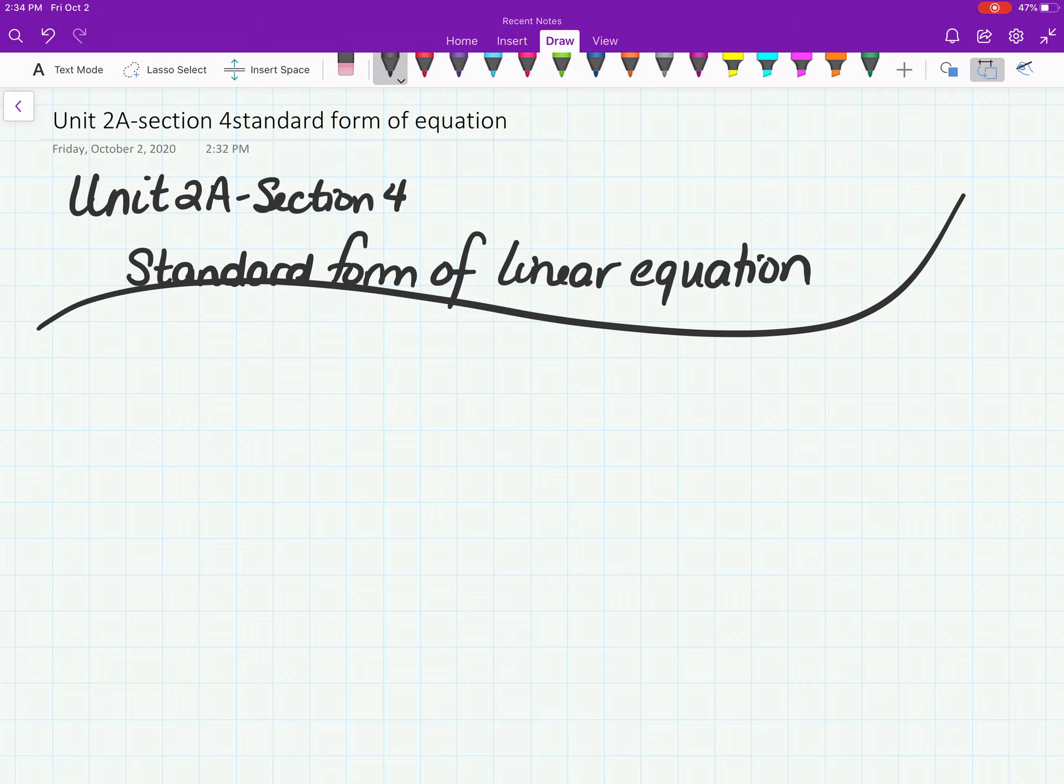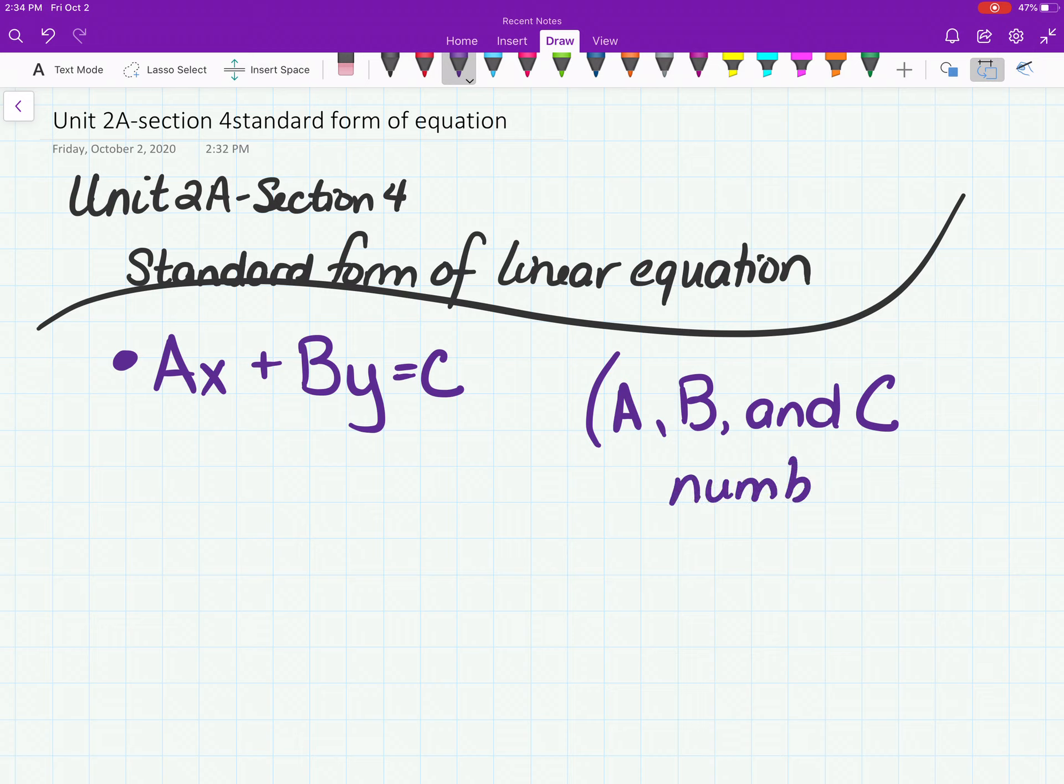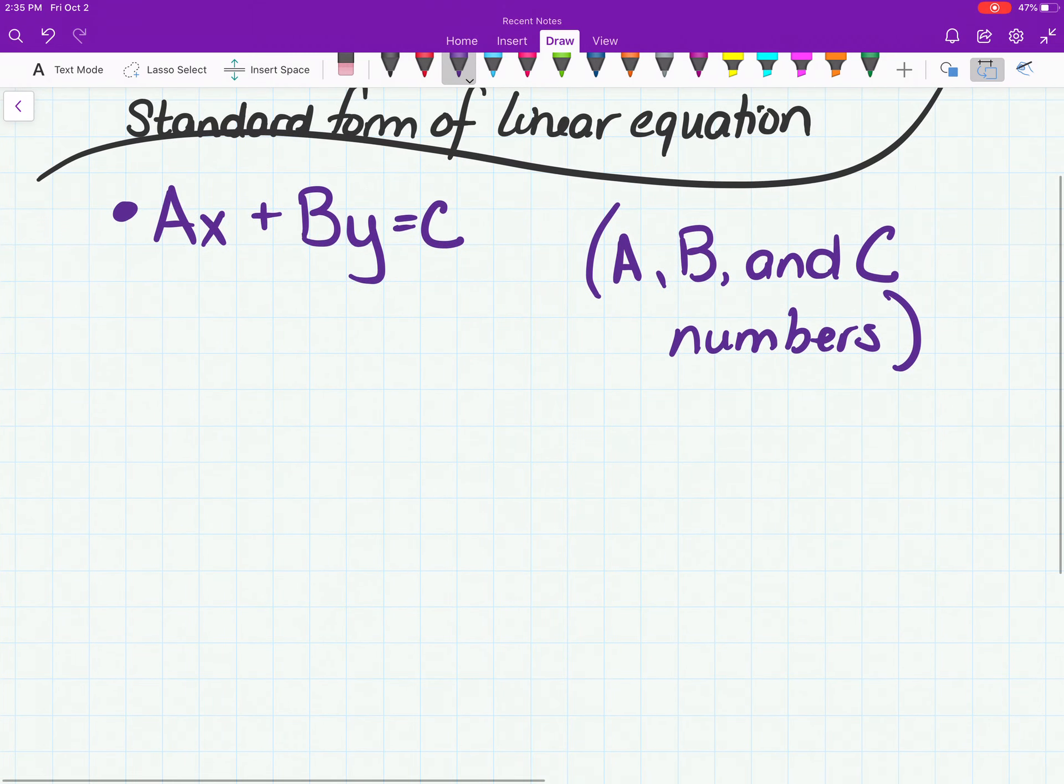Now, there's a couple things you have to remember with standard form, and it kind of has a checklist. The first thing it needs to look like this: Ax plus By equals C. A, B, and C are numbers.